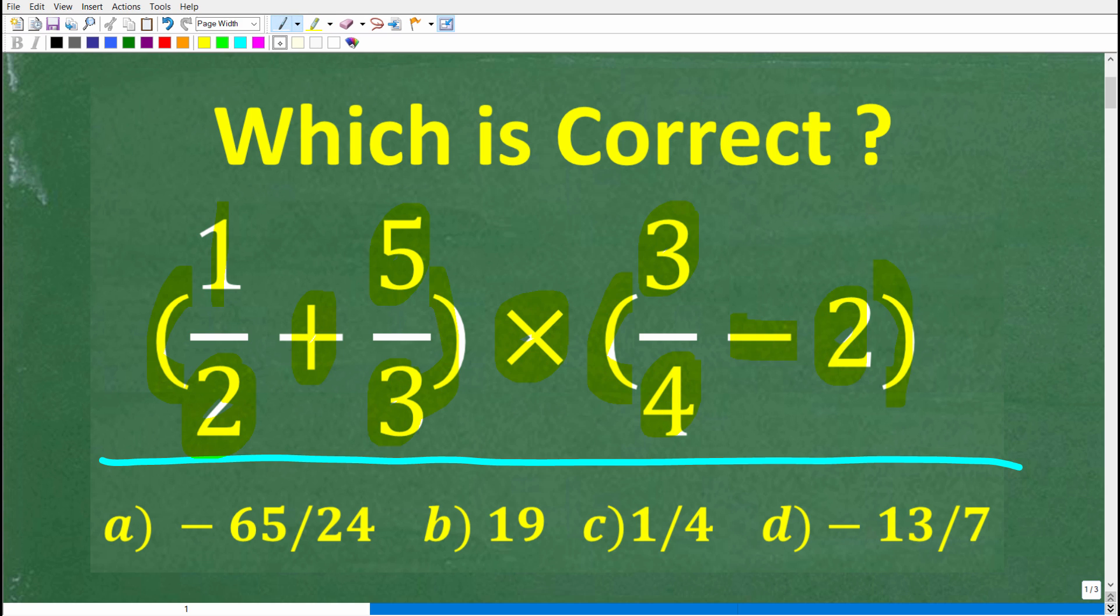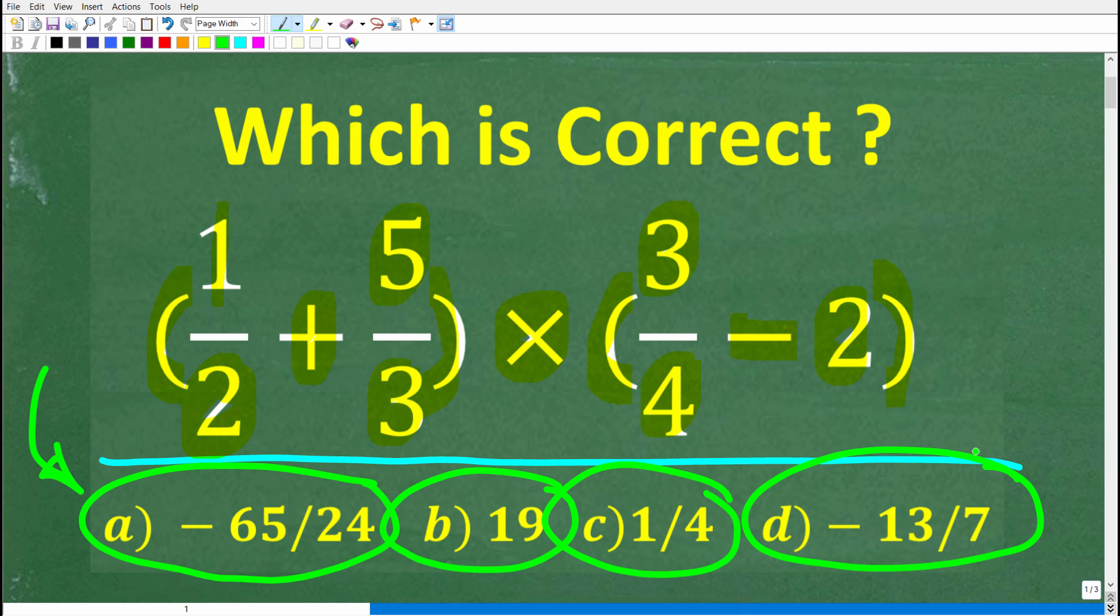All right, so once again, no calculators, but we do have a multiple choice question here. Let's take a look at our answers. So A is negative 65 over 24, B is 19, C is 1 fourth, and D is negative 13 over 7.